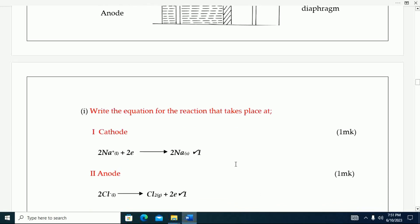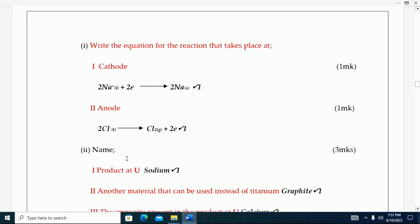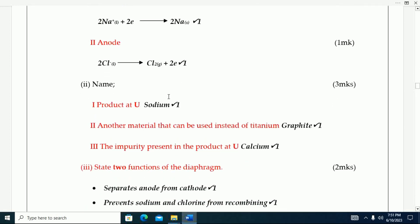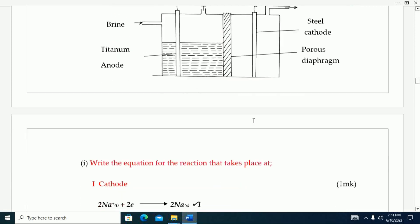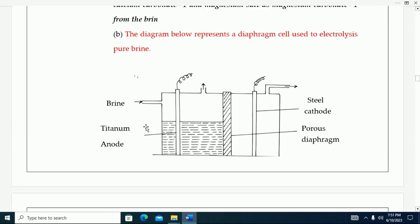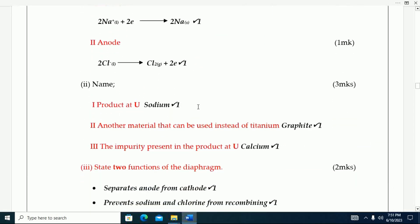You are told to write the equation for the reaction that takes place at the cathode. The reaction, the equation is this one. Name product U. Product U is sodium hydroxide.